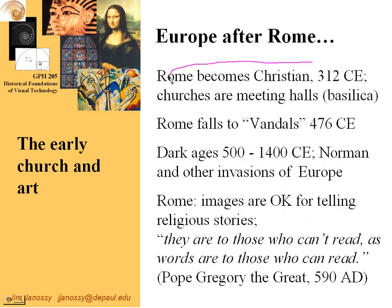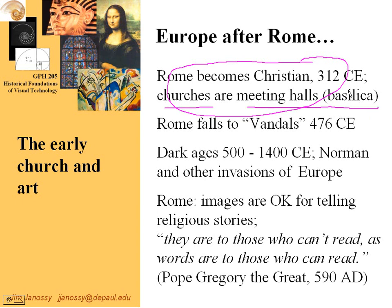Rome becoming Christian changed places of worship. Pagan celebrations typically occurred outdoors, but Christian church services would occur inside. Meeting halls were called basilicas, and we'll see how the earliest churches were large meeting halls patterned on those used for civil government.